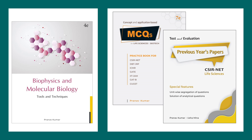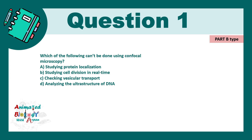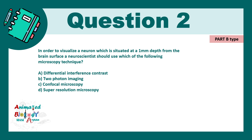This video is strictly based on the difficulty levels that can be asked in CSIR NET. Question 1: Which of the following can't be done using confocal microscopy? A) Studying protein localization, B) Studying cell division in real time, C) Checking vesicular transport, D) Analyzing the ultrastructure of DNA. The correct answer is option D. Analyzing the ultrastructure of DNA — or ultrastructure of any biomolecule — is not possible with any light microscopy technique; it is possible with cryo-electron microscopy, NMR spectroscopy, or X-ray crystallography.